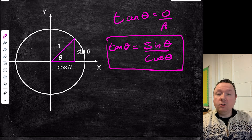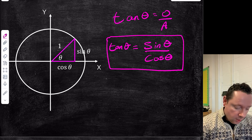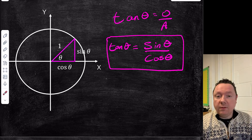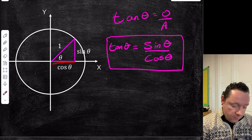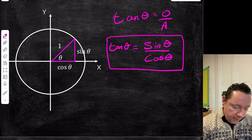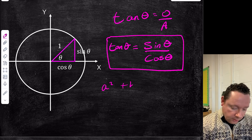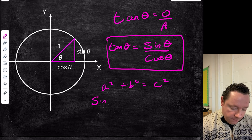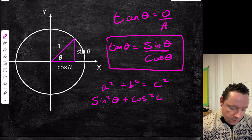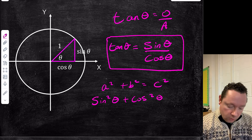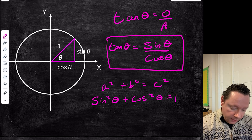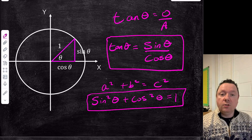We can get one other trig identity by using Pythagoras. You should know that a² + b² = c². Substituting in, we get sine squared theta plus cos squared theta equals c squared, which is just 1 squared, which is 1. So we've now got our second identity: sin²θ + cos²θ = 1.